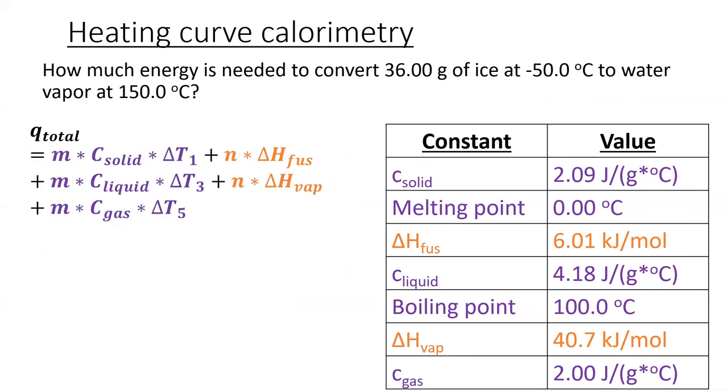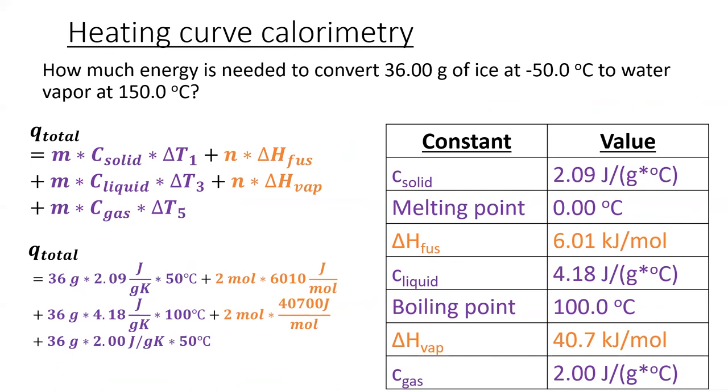Finally, we can set up one big equation and plug in each of the numbers. Notice that I converted the enthalpy values from kilojoules to joules so that the units match those in the mc delta t expressions. Adding it all up, I get 115,830 joules or about 116 kilojoules.